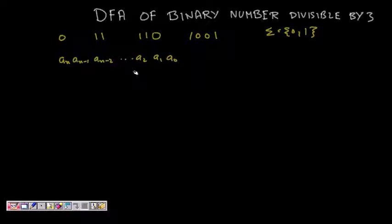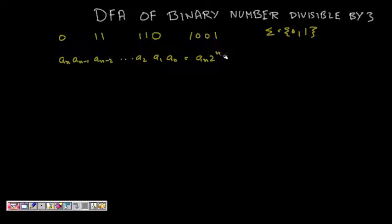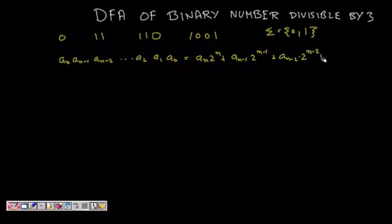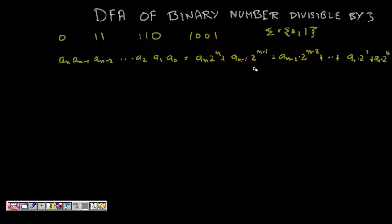Let us look a little bit at binary numbers. This number is equal to a_n × 2^n + a_{n-1} × 2^{n-1} + a_{n-2} × 2^{n-2} + ... + a_1 × 2^1 + a_0 × 2^0.